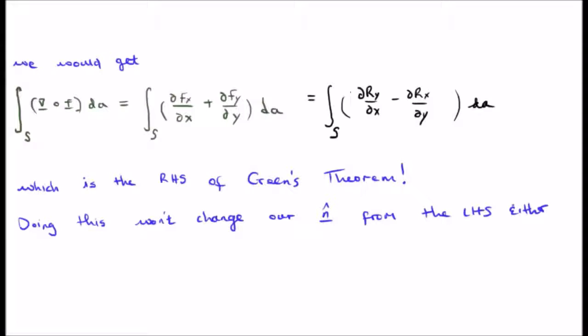If we plug that in, we get exactly what we want, we get the right hand side of Green's theorem. And doing this won't change the n hat from the left hand side either. That's a very important subtlety.